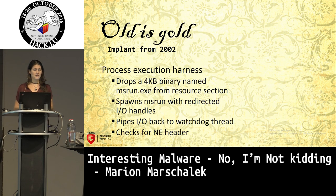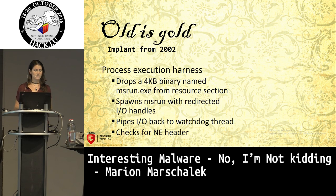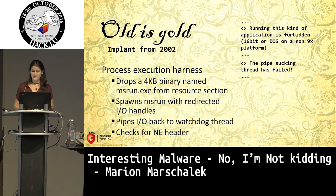Furthermore, the binary would drop a four-kilobyte executable which would be used to spawn other processes. By dropping that binary, redirecting the input handles, and spawning a third-party process, the execution harness would still have control over the executed binary, protecting the process from other security products on the system. An interesting point about this dropping mechanism was that it would check the PE header of the third-party executable — starting with a search for the PE header, but also checking whether it had a valid NE header. In my short analyst life I had never heard of NE before. Googling found out it's the New Executable header, which was there before PE was even a thing. One string in the binary said something like 'running this kind of application is forbidden because 16-bit or DOS on a non-9x platform are forbidden.'